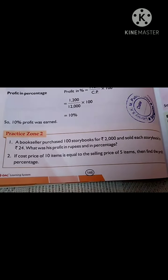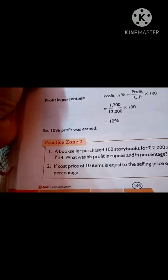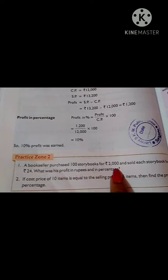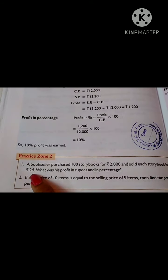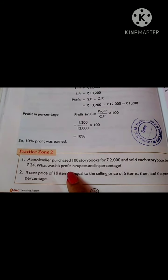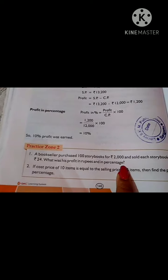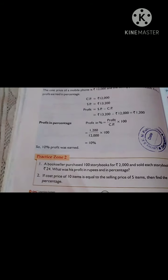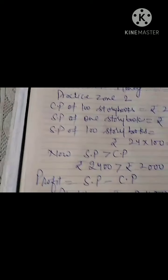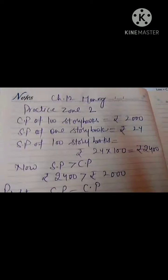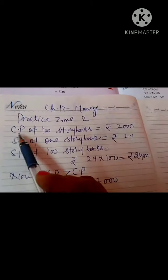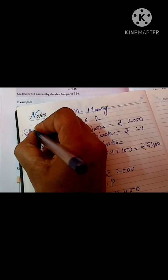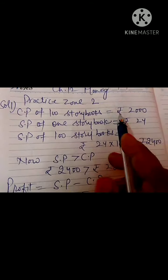Question number one: here a bookseller purchased 100 story books for rupees 2000 and sold each story book for rupees 24. What was his profit in rupees and in percentage? So we are going to get profit in rupees and in percentage. Here solution number one — cost price of 100 story books is rupees 2000.